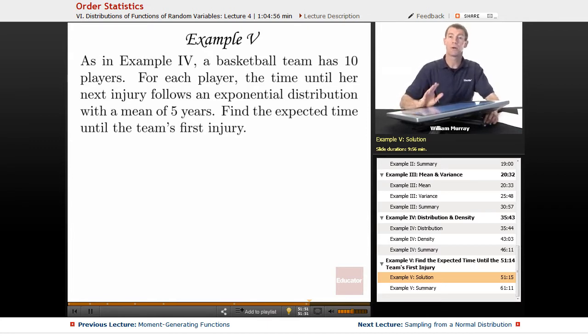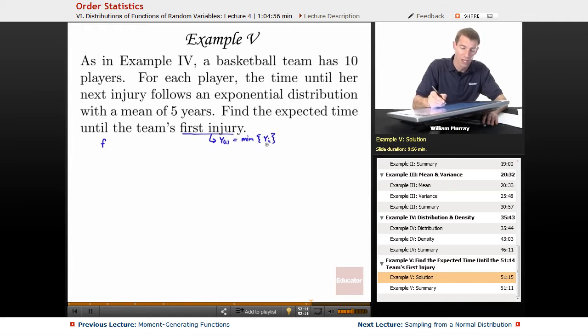Let me remind you what we figured out in Example 4. We figured out that the time until the team's first injury—the first injury means we're looking at y sub 1, the minimum time until an injury among all those players. We figured out the density function for f of y sub 1, which was 2e to the negative 2y.